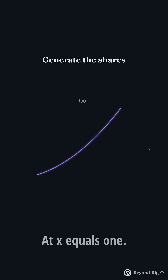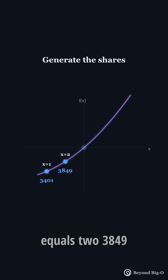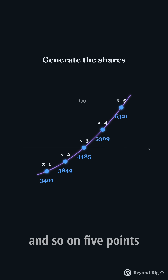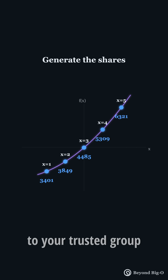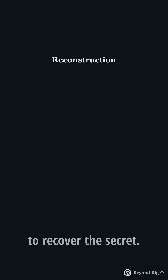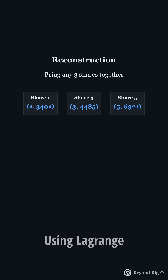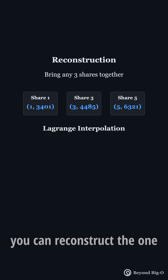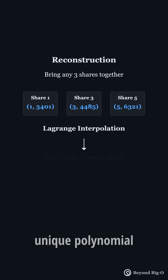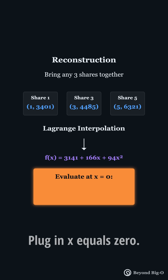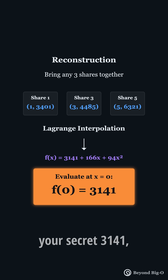Now we evaluate at five different points. At x=1, we get 3,401. At x=2, 3,849. And so on — five points, five shares. Hand them out to your trusted group. To recover the secret, you only need any three of those shares. Using Lagrange interpolation, you can reconstruct the one unique polynomial that fits them all. Plug in x=0, and there it is — your secret.